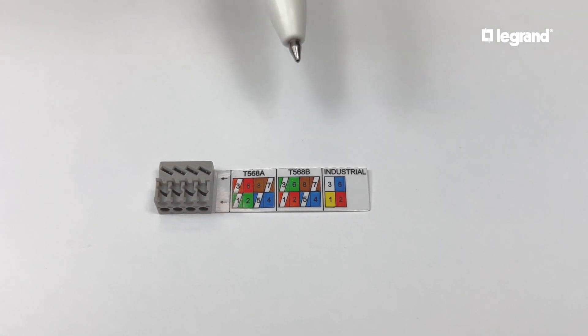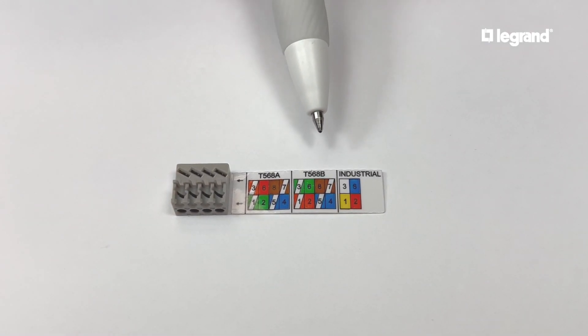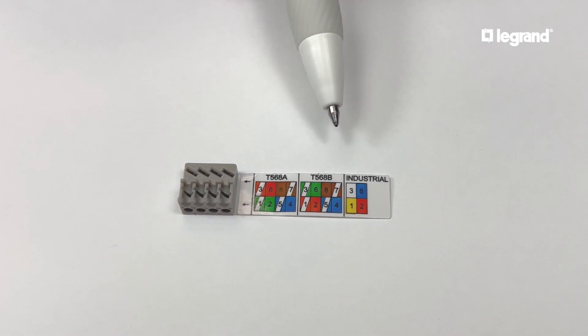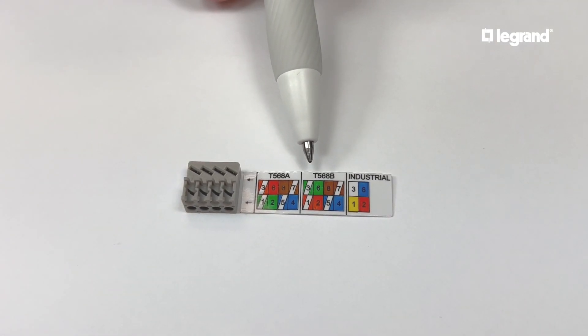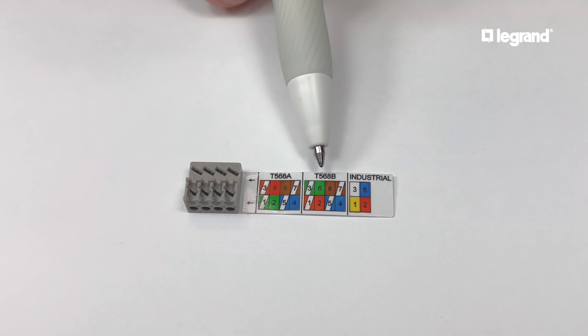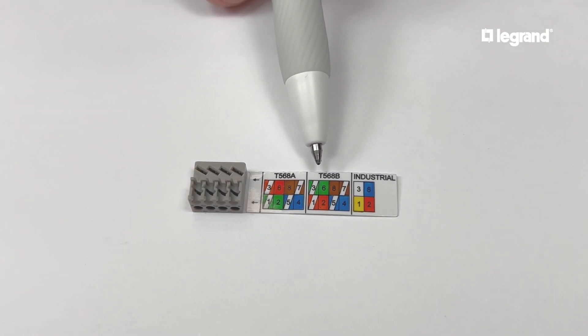The wiring guide comes with instructions for both T568A and B wiring. In today's video, we're going to be covering the T568B guide, which shows white orange, orange, white green, blue, white blue, green, white brown, brown, which will be inserted through the holes on the bottom row of the wiring cap.